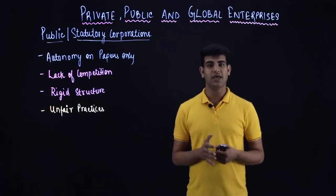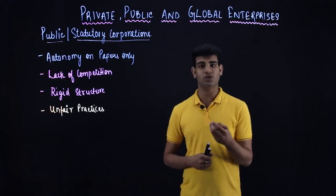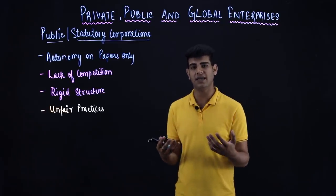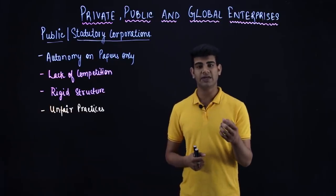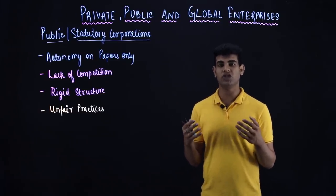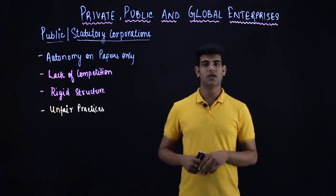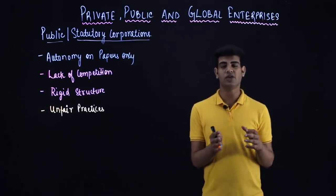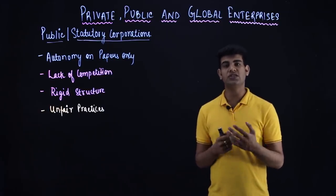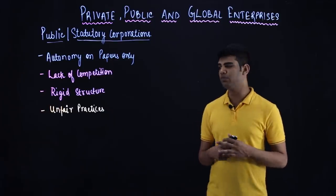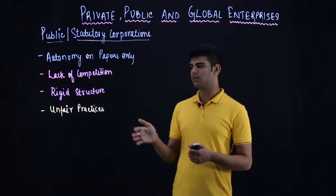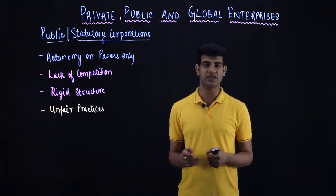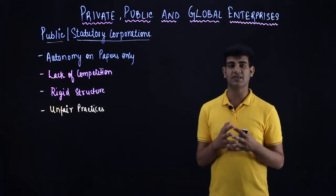The next demerit is lack of competition — because the main motive is service, there is no competitive spirit. It has only one goal: social service, so there is no motivation to perform exceptionally well. Also, because the body is formed by a parliament act, its rules and regulations follow that act, and changing the act itself is difficult, making the structure very rigid. There are also many unfair practices — organizations may charge excessively, leading to various unfair practices.